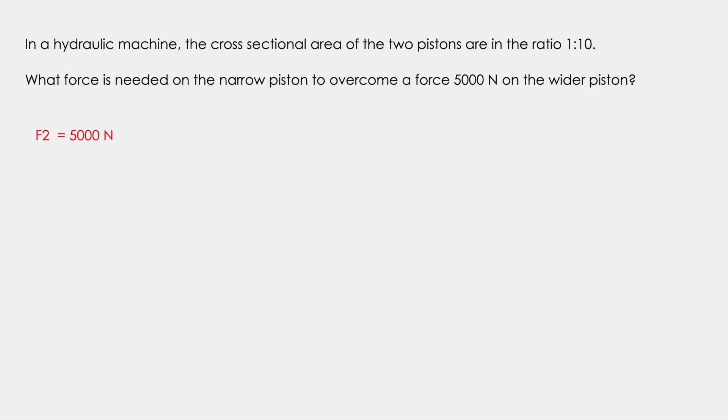Now here F2 is 5000 Newton and we have not been given the cross sectional areas of the two pistons. However we have been provided with the ratio of the cross sectional areas and that is 1 is to 10. And we need to find out the input force F1. We know that F1 upon F2 is equal to A1 upon A2 and making F1 the subject and replacing the values, we get F1 as 500 Newton.